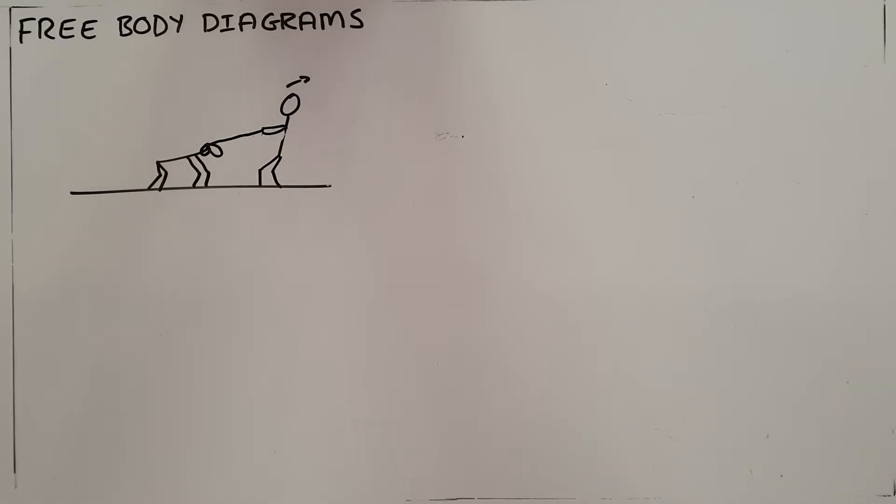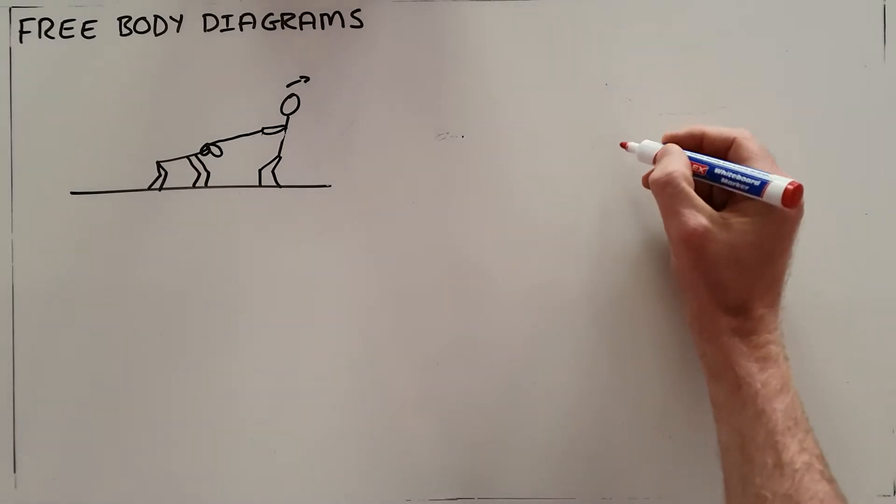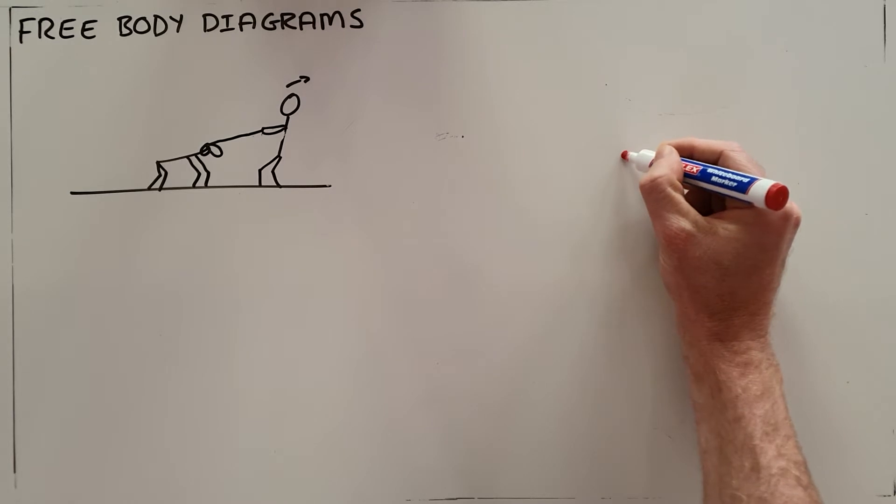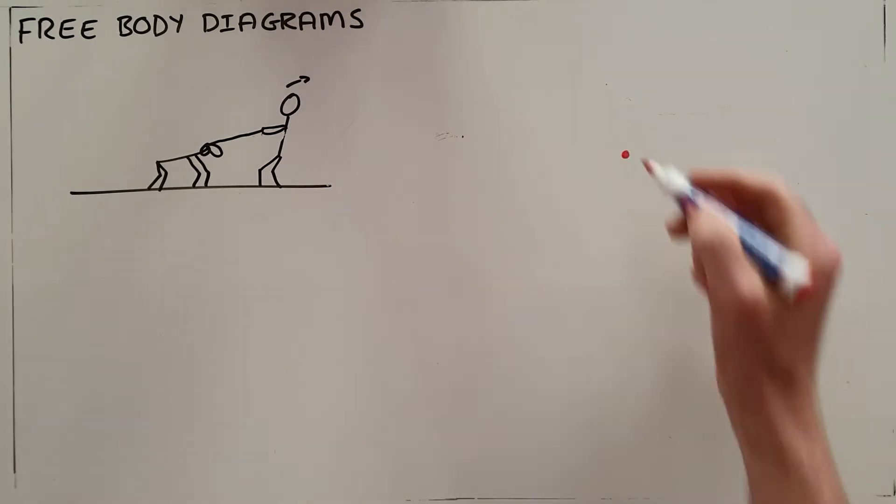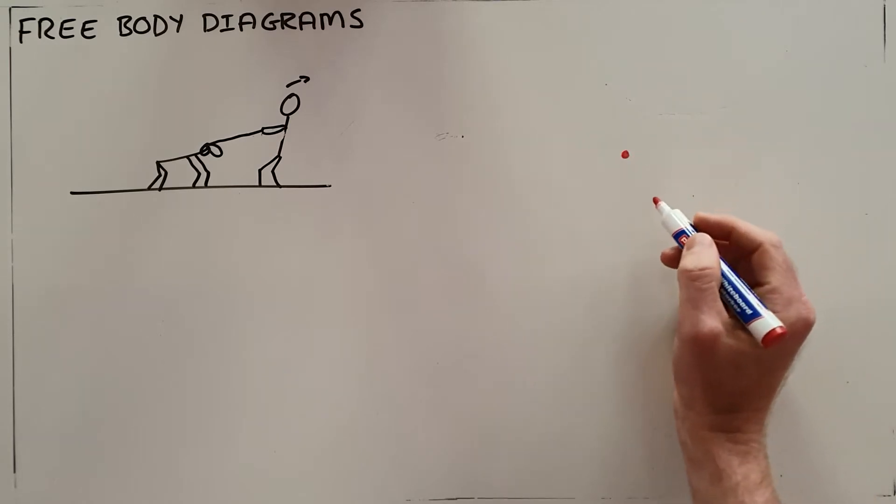There are largely two main types of diagrams that we do. The most common one though is the free body diagram. What the free body diagram does is it simplifies the drawing by starting out with the assumption that the object can be condensed to a single point or dot. This normally represents the center of mass of that object.